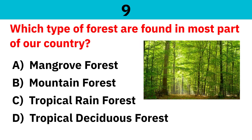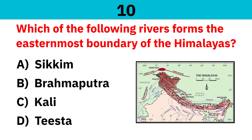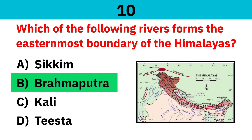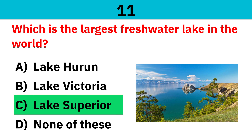Which type of forests are found in most parts of our country? Correct answer is Tropical Deciduous Forest. Which of the following rivers forms the easternmost boundary of the Himalayas? Correct answer is Brahmaputra. Which is the largest freshwater lake in the world? Correct answer is Lake Superior.